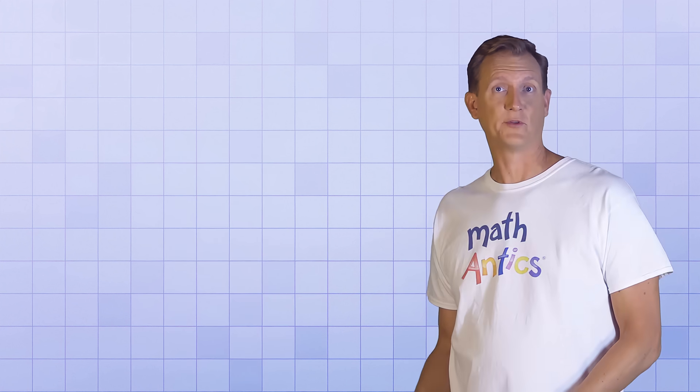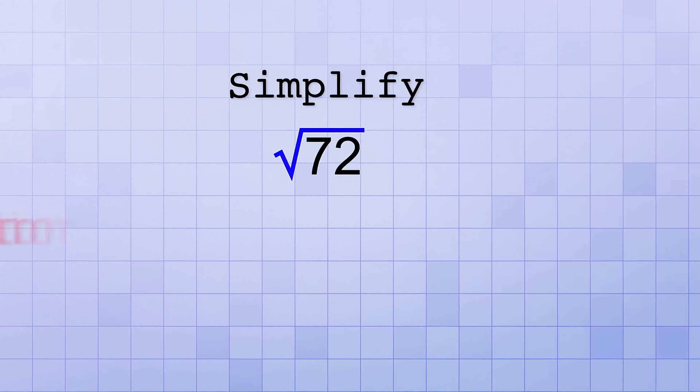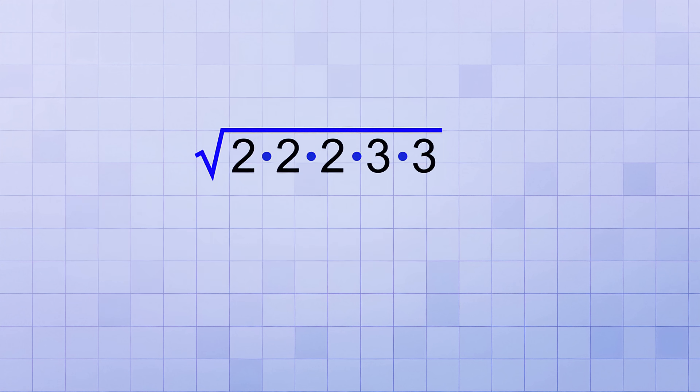Let's try another example to make sure you understand what's happening. Let's simplify the square root of 72. If we factor 72 all the way down to its prime factors, we get 2 times 2 times 2 times 3 times 3. As you can see, there are two pairs of factors that form perfect squares—2 times 2 and 3 times 3. And there's a 2 left over that doesn't form a pair.